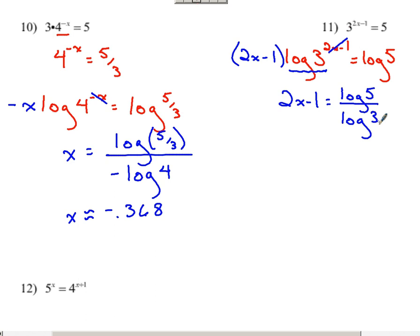If you're solving for x, then just add over the one and divide everything by two, right? So 2x would equal log of five over log of three plus one, divide the two over and calculate that mess out. We've got our approximation for x.